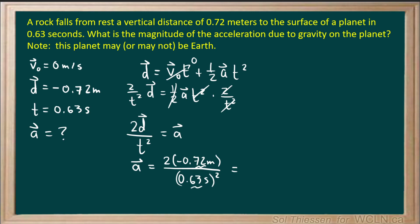So our final answer should have two significant figures. So 2 times negative 0.72, divided by 0.63... sorry, 0.63 squared, is equal to negative 3.6, if we round to two significant figures, meters per second squared.